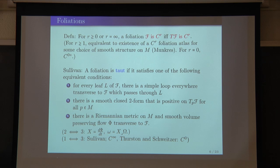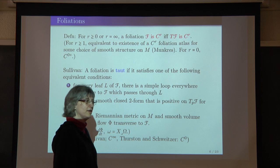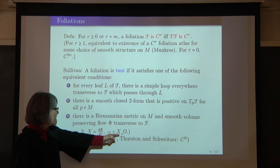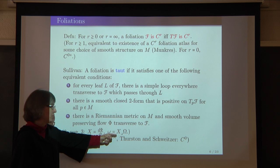Question: in the last characterization, where does the metric come in? The game is I want to have a Riemannian volume form, and then I can jump between the flow and the two-form in a standard way. So the metric is used implicitly in that context.